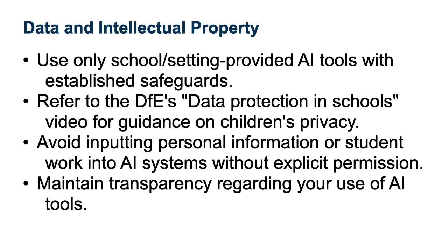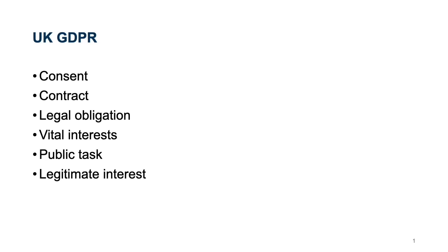It's also very important to be transparent about how you're using the tools. When using AI, it's crucial to understand the difference between data protection and intellectual property — two distinct legal considerations that sometimes get confused. Under UK GDPR, if you're processing personal data — that's information that identifies an individual, such as pupil names, assessment or work — you must have a lawful basis. This could be consent, contract, legal obligation, vital interests, public task or legitimate interest. Before using any AI tool that processes personal data, you must ensure that it complies with UK GDPR. If the tool stores, learns from or shares the data, you could be breaching data protection law unless appropriate safeguards are in place.